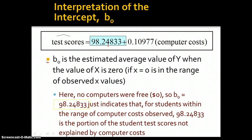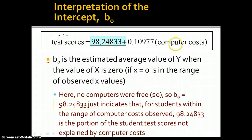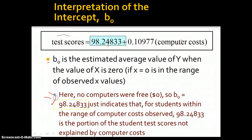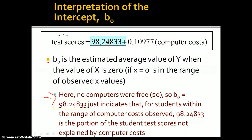So b sub 0 is the estimated average value of y — that's the test scores — when the value of x, those are the computer costs, is 0. So if computer costs are 0, it's in the range of observed x values. In our case, no computers were free. So our b sub 0 indicates that for students within the range of computer costs observed, 98.24833 is the portion of the student test scores not explained by computer costs.